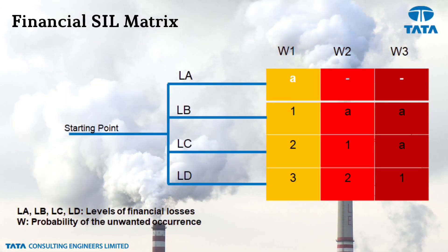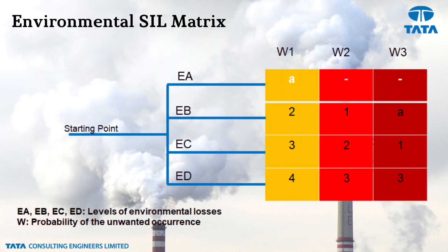Similarly, financial SIL is determined using parameters LA, LB, LC, and LD representing levels of financial losses. Environmental SIL is also determined using its own matrix. For each loop, safety SIL, financial SIL, and environmental SIL are all determined, and the highest among the three is taken as the final SIL rating for that loop.